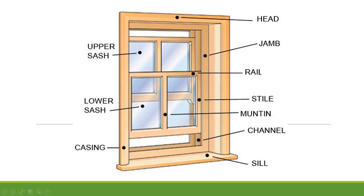Inside the frame, these horizontal components are called rails. This other horizontal component belongs to the outer frame and is also called the head. The vertical component of the outer frame is called the casing. So inside the frame, the horizontal components are called rails.